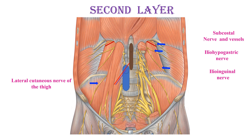The genitofemoral nerve lies in front of the iliacus, and the genitofemoral nerve lies in front of the psoas major. The sympathetic trunk is on each side of the vertebral column — that is one of the nervous tissue components of this layer.